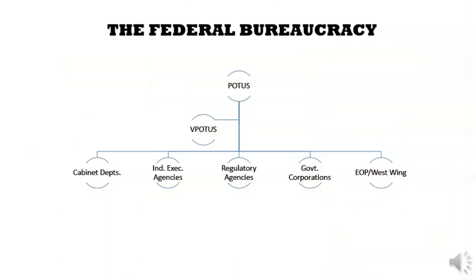The federal bureaucracy is part of the executive branch. The executive branch is made up of POTUS, the President of the United States, as well as the Vice President. You're going to have to know that there are five parts of the bureaucracy, and those are listed at the very bottom of this chart. We'll go over these in particular and in specific.